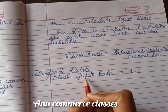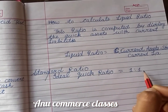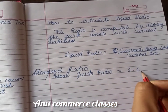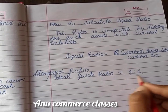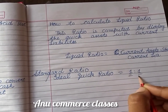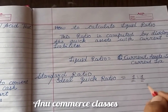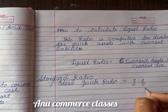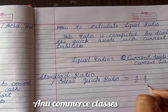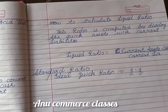The standard or ideal quick ratio is 1:1. A ratio of one is considered the ideal and standard ratio for liquid ratio.